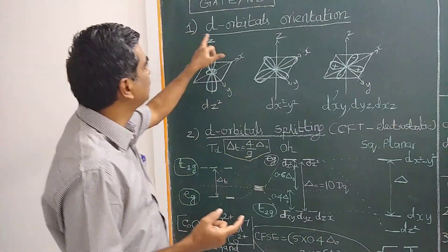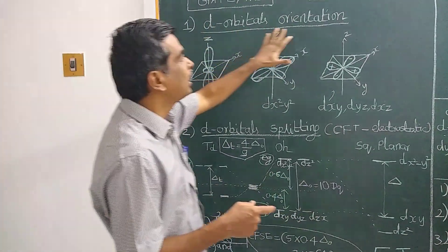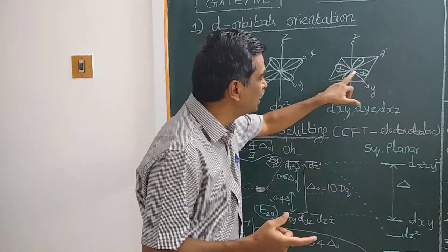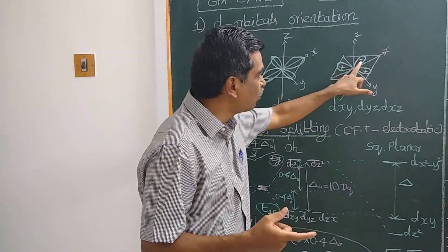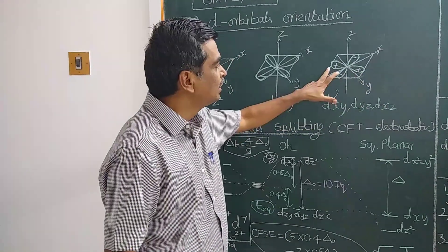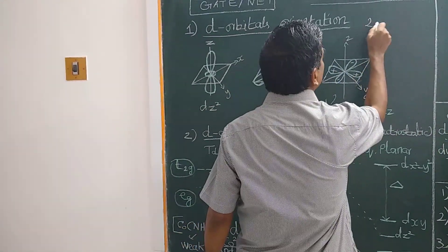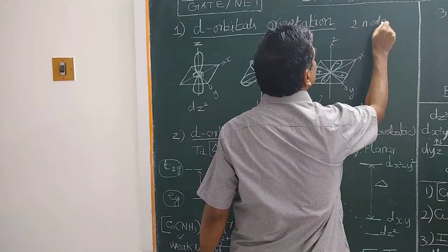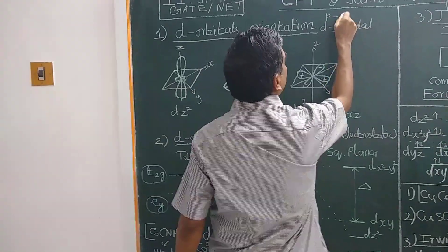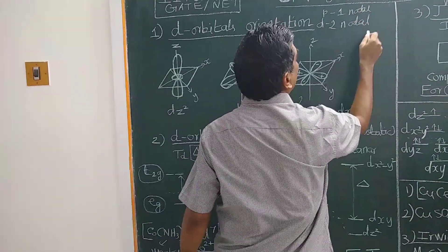Let us first look at the orientation of D-orbitals — how the D-orbitals are oriented and what their shape is. D-orbitals have a double dumbbell shape and have two nodal planes. Whereas P-orbitals have only one nodal plane.